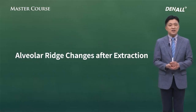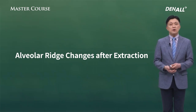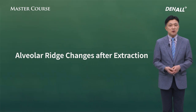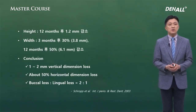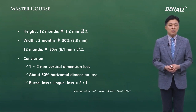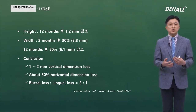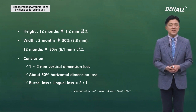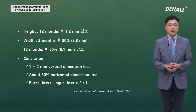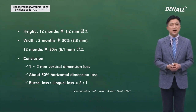The alveolar ridge changes after extraction — resorption occurs. After 12 months, the height reduces by 1.2 mm. In terms of width, three months later it reduces by 30%, and it continues to become resorbed throughout life. Two times more resorption occurs on the buccal side compared with the lingual side.